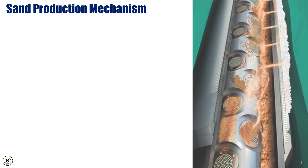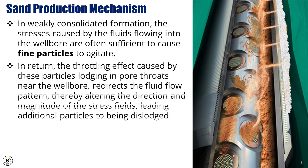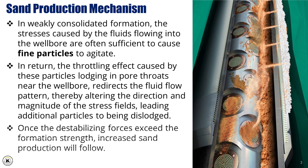Sand production mechanism. In weakly consolidated formations, the stresses caused by fluids flowing into the wellbore are often sufficient to cause fine particles to agitate. The throttling effect caused by these particles lodging in pore throats near the wellbore redirects the fluid flow pattern, thereby altering the direction and magnitude of the stress fields, leading additional particles to being dislodged. Once the destabilizing forces exceed the formation strength, increased sand production will follow.